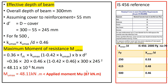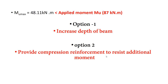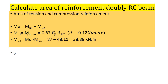In this case we have two solutions — one practical, one not. Either you can increase the depth of the beam, or you can provide compression reinforcement. The practical solution is option two: provide compression reinforcement to resist the additional moment. The total moment equals mu1, the maximum moment of resistance for the balanced section, plus mu2, the additional moment the beam has to take.